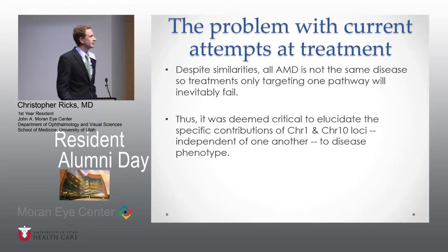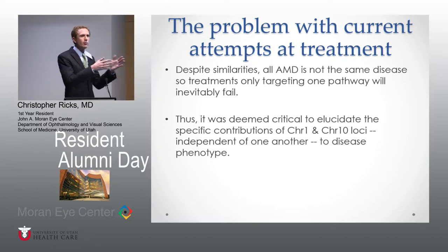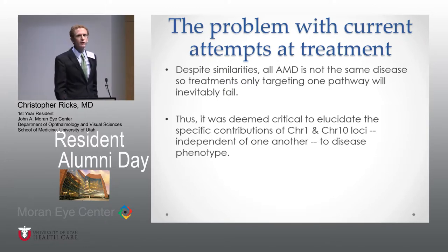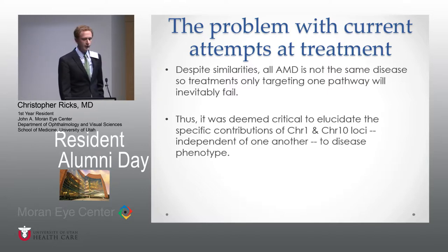This gives us the current problem with any attempts at treatment. If you don't know what you're treating, you don't know if you're going to get any good results. So if you try to treat AMD but you're really treating chromosome 1 and someone has chromosome 1 and 10 risk factors, you're not going to get much benefit — the treatment will fail, even if it did affect the chromosome 1 risk. So that makes it crucial to find out how these are different and how to treat them separately, so that down the road we can treat them both together.